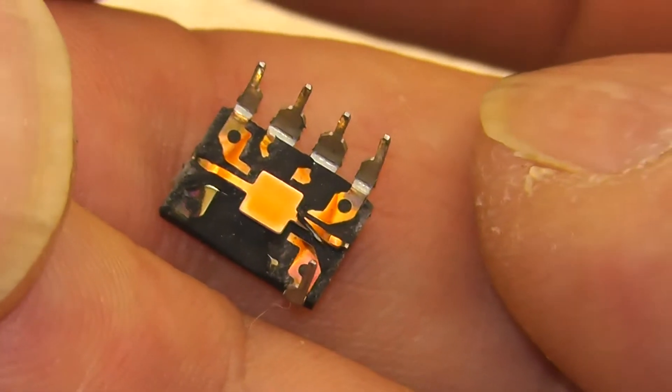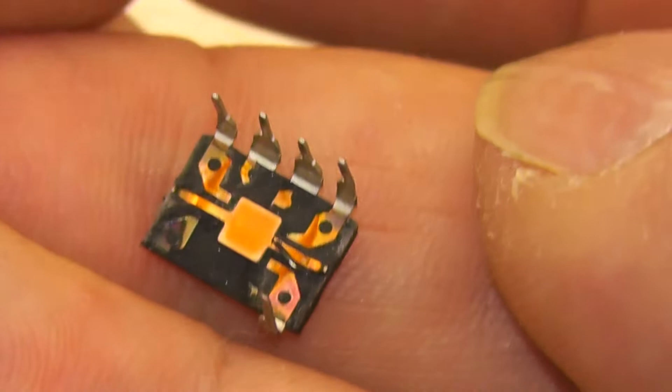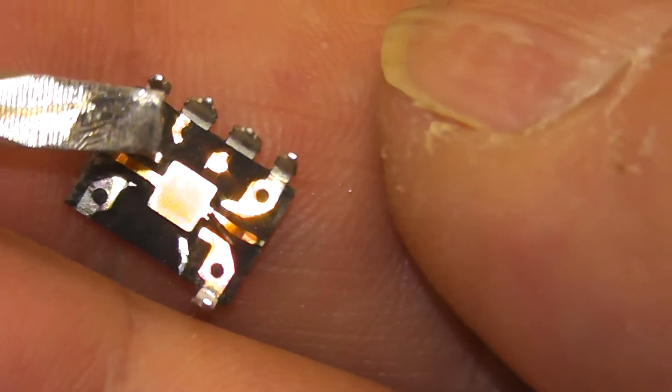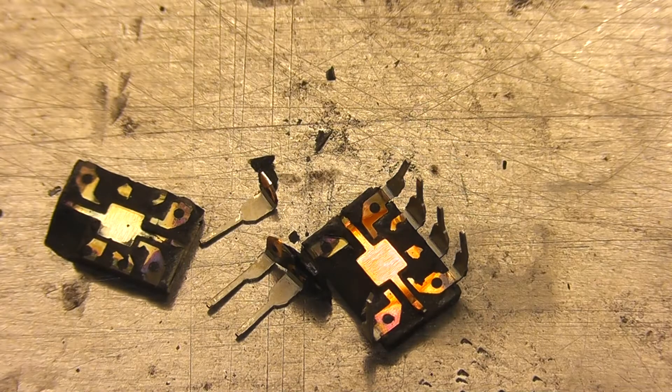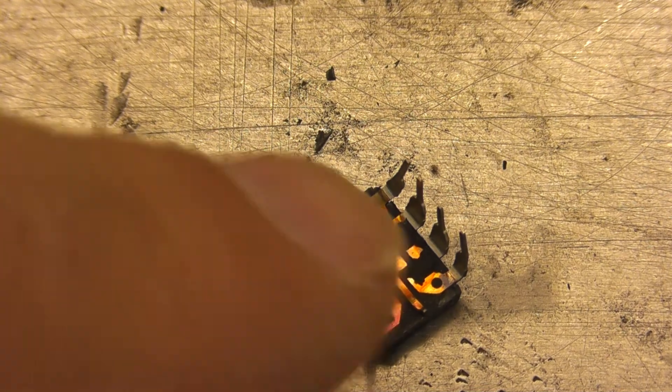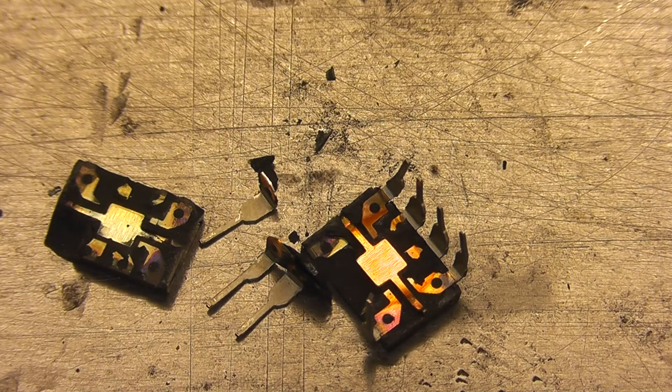Yeah, there is no bond wire. Usually you should see them here on the pins, somehow to the chip. But there is no bond wire. So this is the reason why we have no resistance between the pins - they are open, they are not connected.